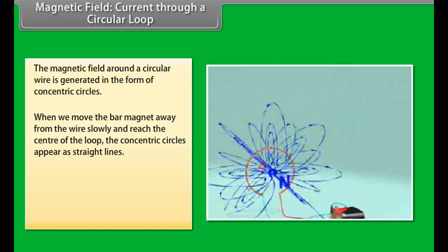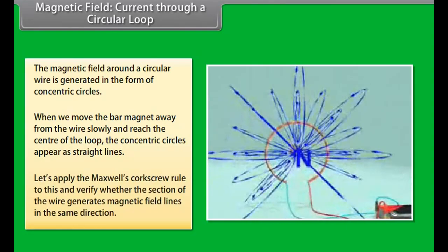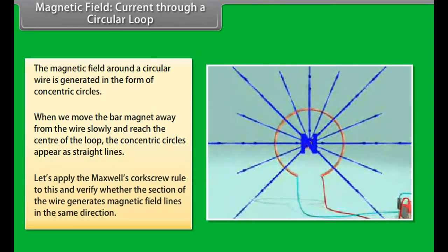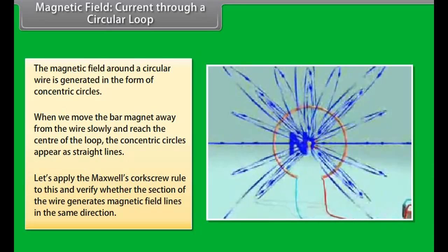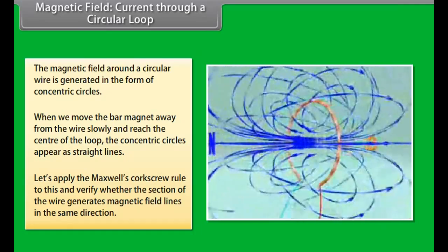The entire magnetic field appears as a straight line. Now, try applying Maxwell's Corkscrew Rule to this and check whether every section of the wire is able to generate magnetic field lines in the same direction.